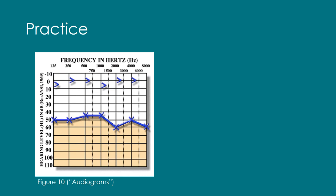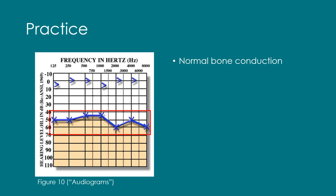Let's use the concepts we've just covered to interpret this audiogram. Since the graph is in blue, we know that represents the left ear. A right-pointing arrow represents unmasked bone conduction testing. We can see that bone conduction is well within normal hearing limits of negative 10 dBHL to 15 dBHL. The X represents unmasked air conduction, and we can definitely see a loss here. We know that normal bone conduction and a loss of air conduction with an air-bone gap represents a conductive loss.